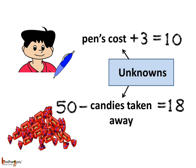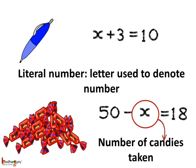In these two cases, the cost of the pen and the number of candies taken away are unknown quantities that we need to find. We can express such unknown quantities using the letters of the English alphabet too.